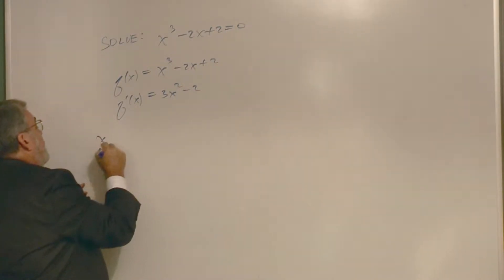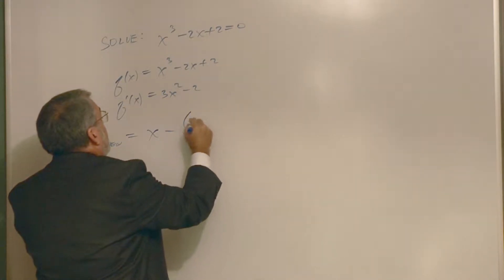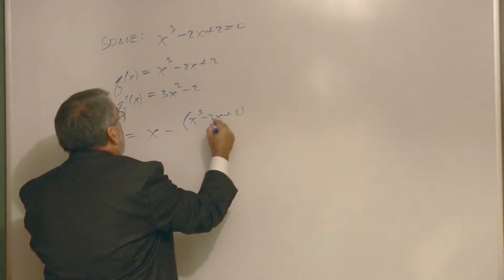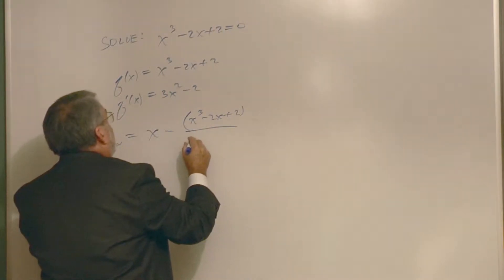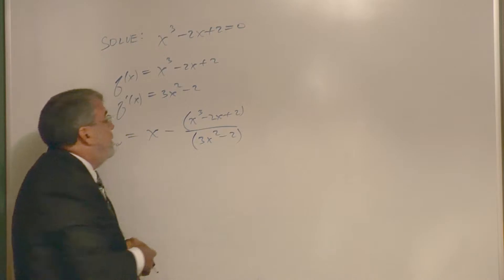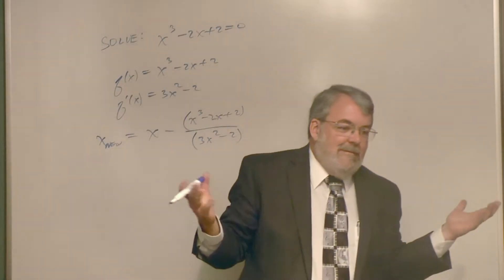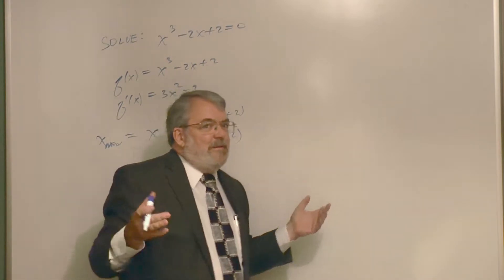So x new would be the old x minus the function x cubed minus 2x plus 2 divided by my derivative 3x squared minus 2. Now I think you probably would get the right answer if you just pick the number.